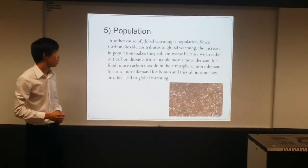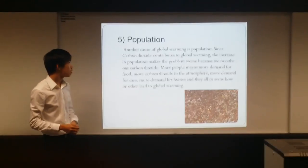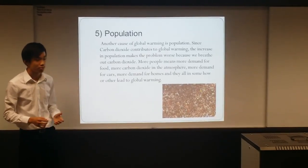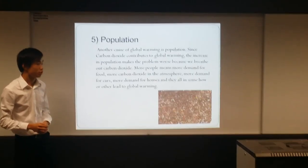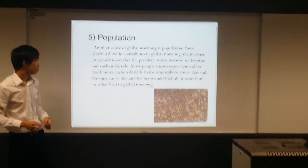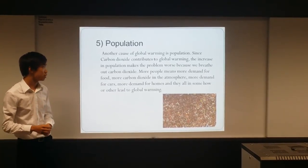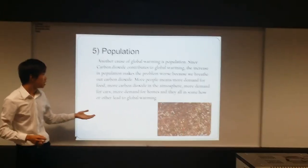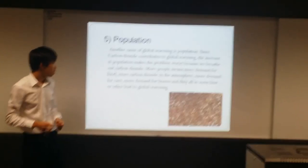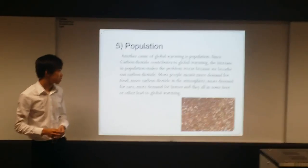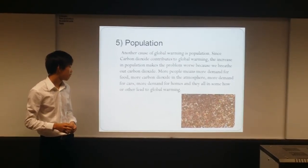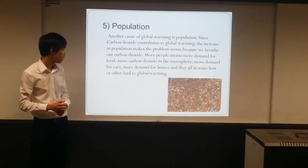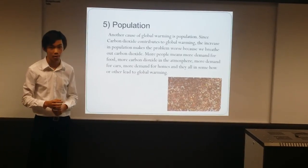The fifth factor is population. Another cause of global warming is population. Since carbon dioxide contributes to global warming, the increase in population makes the problem worse by producing more carbon dioxide. More people means more demand for food, more carbon dioxide into the atmosphere, more demand for cars, more demand for homes — and they all in some way or other lead to global warming.